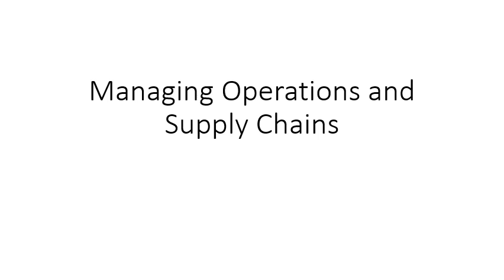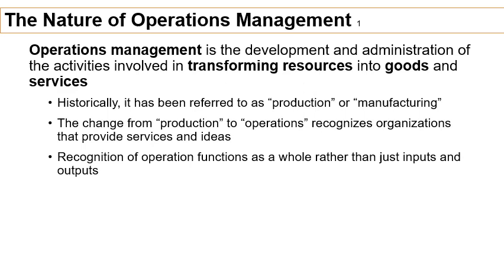Today we're going to talk about how to manage operations and supply chains. Let's start by briefly talking about what operations management is. It's essentially the transformation of resources — all inputs, energy, time, and people — into the goods and services that the company is going to offer in the marketplace. Broadly speaking, it's how we take all our inputs and create the processes required to produce the outputs that the firm is going to offer.